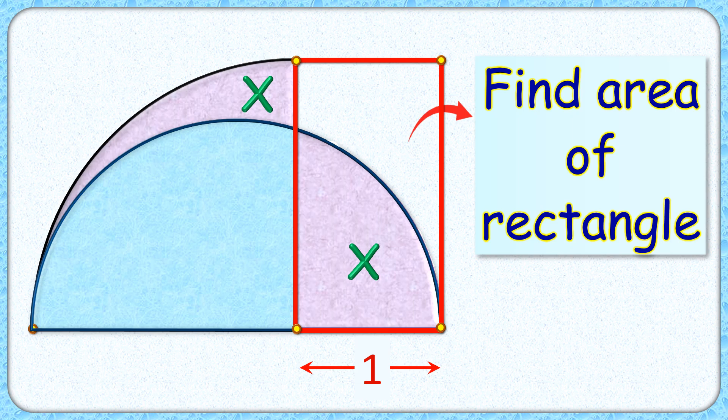Welcome everyone to this interesting question which consists of a semicircle, a quadrant, and a rectangle. Given is the width of the rectangle is one centimeter, and the areas of the purple shaded regions are equal to each other. The exciting part is, with this limited data, we have to find the area of this full rectangle.